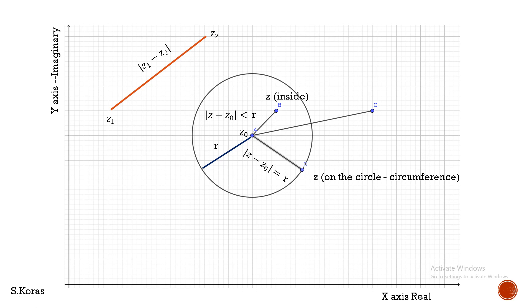In the same way, if a point is outside the circle, let this point be Z. Then surely the distance from the center to this point will be greater than the radius. So the distance — modulus of Z minus Z₀ — will be greater than R. If we know the modulus of Z minus Z₀ and the radius value, we can simply determine whether the point is inside, outside, or on the circle.